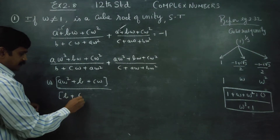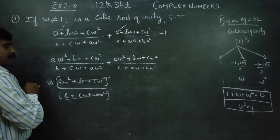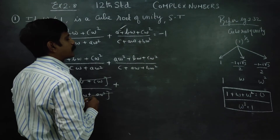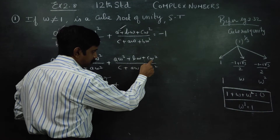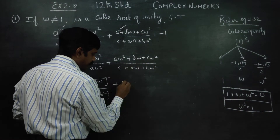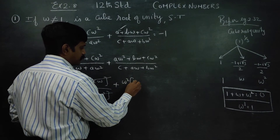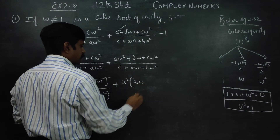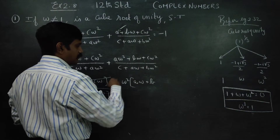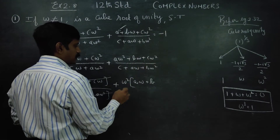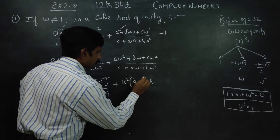Working through the expansion: plus A plus A·ω² plus A — this part cancels fully. Proceeding further, the E·ω term is coming and B·ω term is coming.